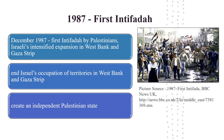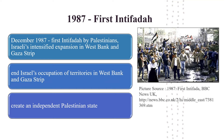Israel's intensified expansion and interest in the West Bank and Gaza Strip led to the First Intifada in December 1987 by Palestinians in the West Bank and Gaza Strip. The objective was to end Israel's occupation in the West Bank and Gaza Strip and also to create an independent Palestinian state. On 15 November 1988, the PLO announced the creation of the State of Palestine with a government in exile, and on April 2, 1989, Yasser Arafat was elected as President. PLO recognized United Nations Resolutions 242 and 338. A government in exile is a government temporarily established on foreign soil following the occupation of its own territory by another authority.